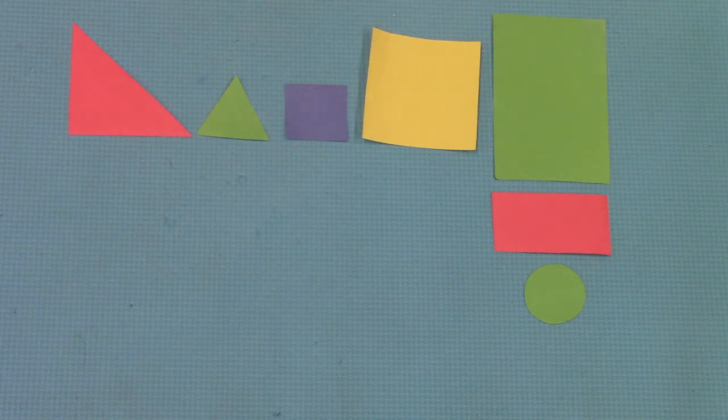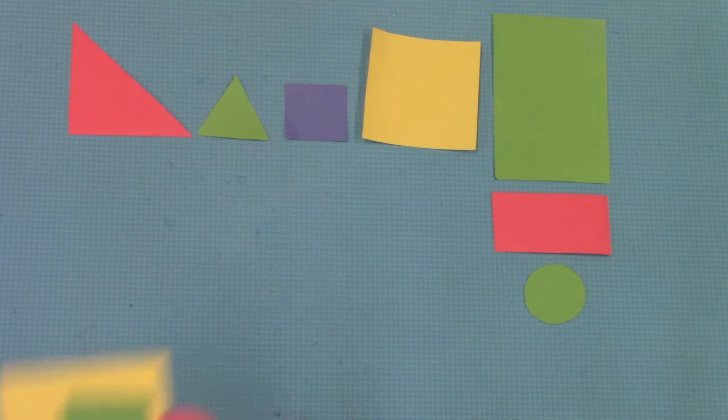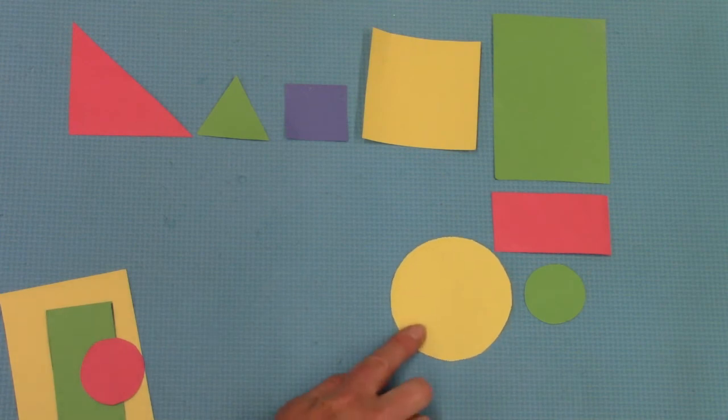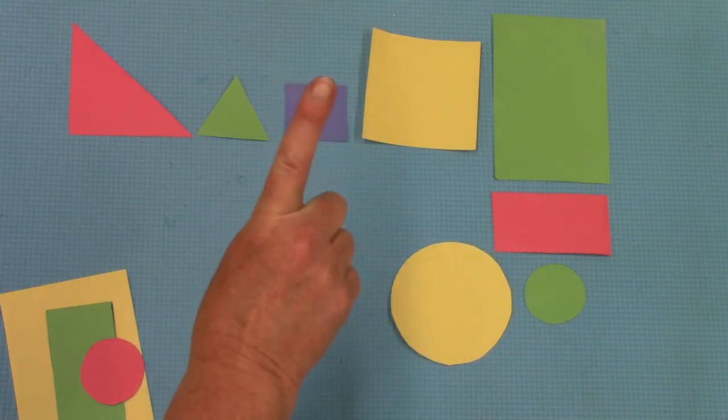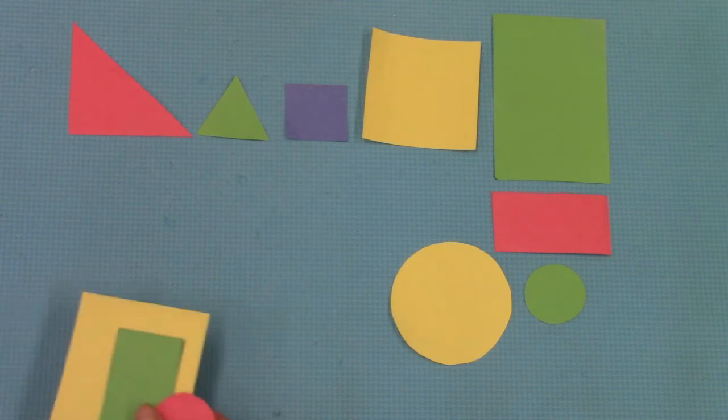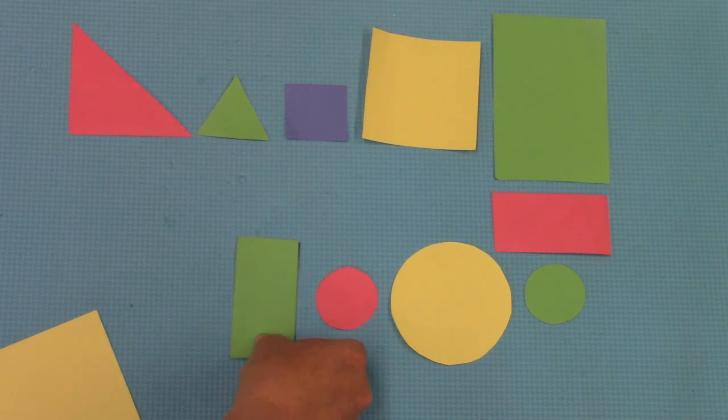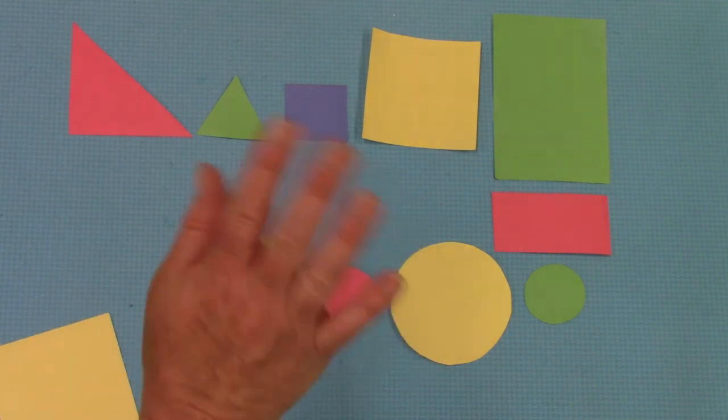I would like for you to have a wonderful time playing the attribute train game. I would like for you to find other shapes that are the same in only one way and different in two ways. Have fun playing with your friends. Have a great day class. Bye-bye.